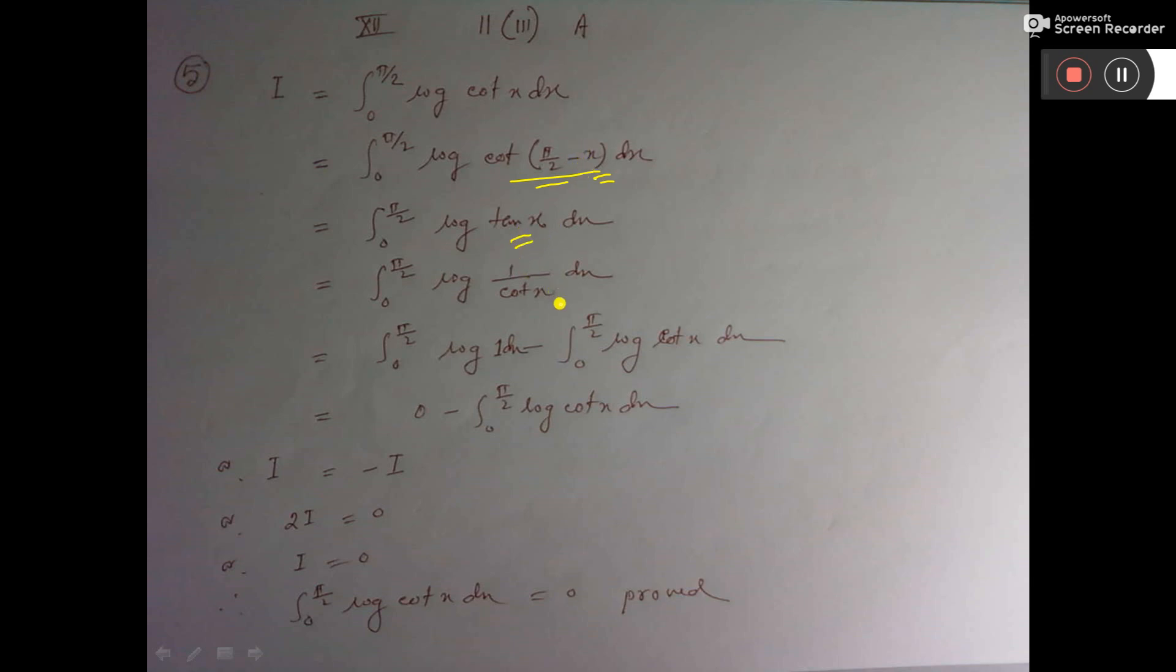Now tan means 1 by cot. Then I apply properties of log: log(u by v) equals log u minus log v.